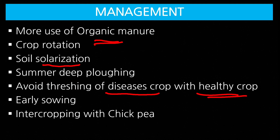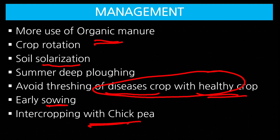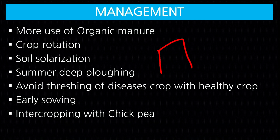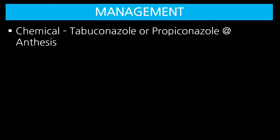If diseased and healthy crops are harvested together, teliospores from diseased plants stick to healthy seeds and cause disease in next season. Early sowing — complete sowing by November. Intercropping with chickpea reduces pathogen spread. Chemical control: spray Tebuconazole or Propiconazole during flowering when favorable conditions exist.